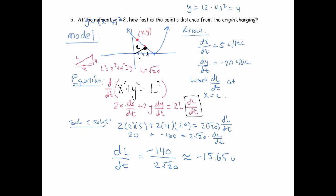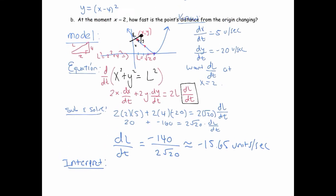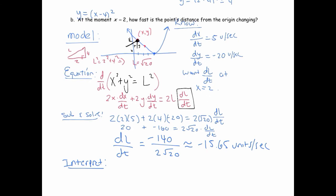So to interpret, we're going to say the point's distance is decreasing. Our distance from the origin. Distance from the origin is decreasing at a rate of 15.65 units per second at that instant.